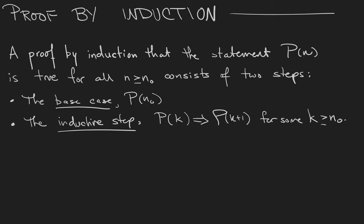The base case is where we prove that P(n₀) is true. The inductive step is where we prove that if P(k) is true for the integer k, where k is some integer greater than or equal to n₀, then it must also be true for the following integer.